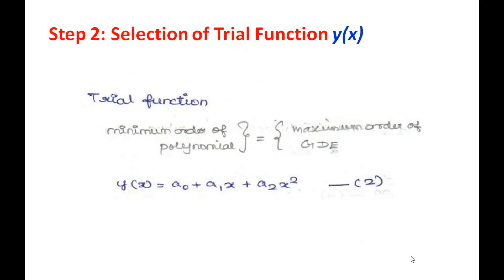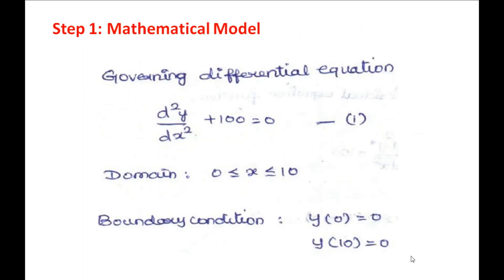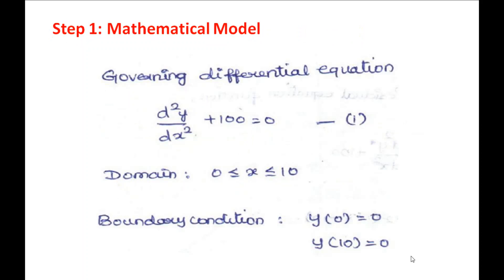The first step is to select a trial function. The thumb rule is: the minimum order of the polynomial must equal the maximum order of the governing differential equation. Since the equation is second-order, we choose a minimum second-order polynomial. If the trial function is not specified in the question, we follow this thumb rule.